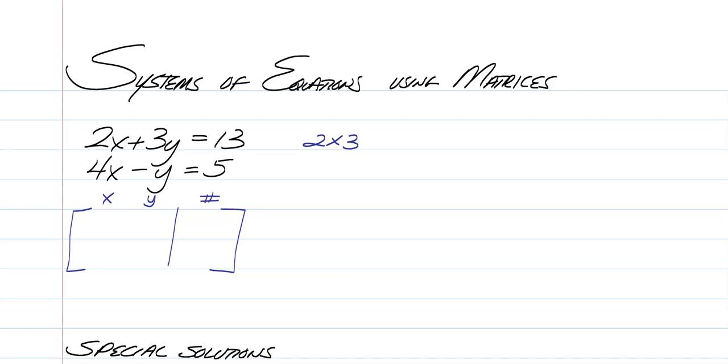It's important to make sure that you have the correct dimensions of the matrix when you type it in the calculator so it knows what we're actually working with. And then to create this matrix, all we have to do is pretty much put our x's, y's, and constants in the correct column. So we have a 2, 3, 13, and then we have a 4, negative 1, 5.